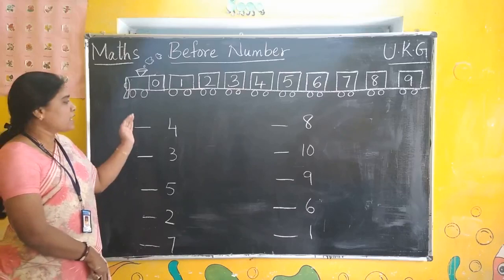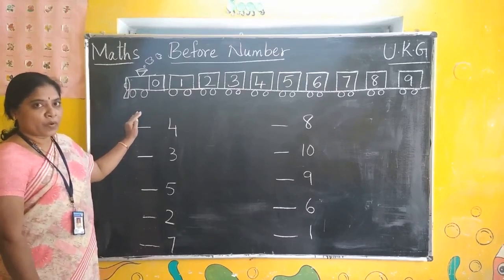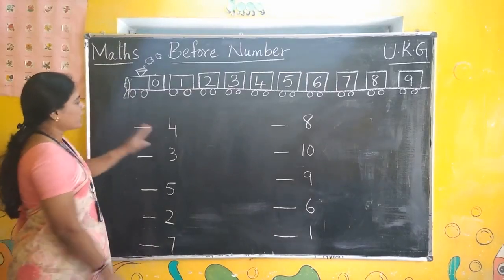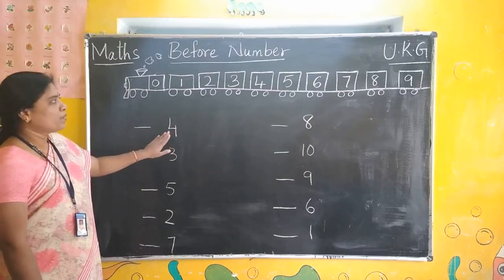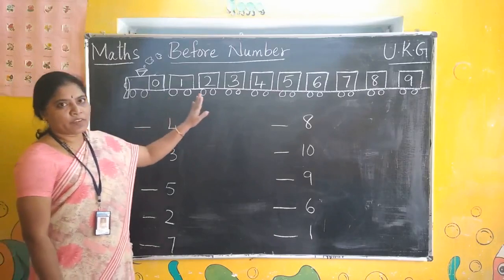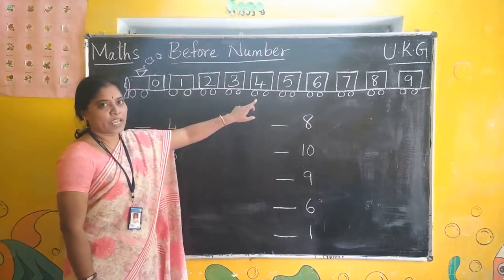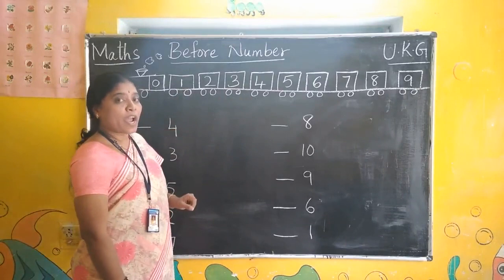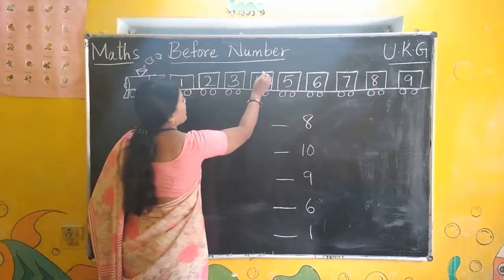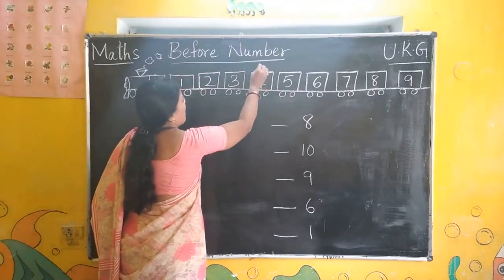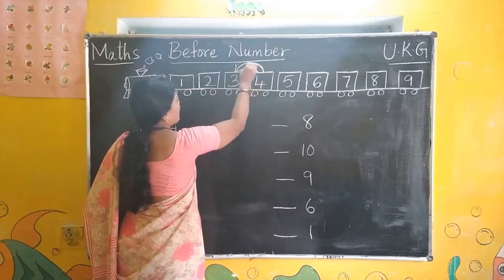Before number means the number that comes first. Now, look at this number. What is this number? 4. Now, look at this train. Where is 4? Here. How to identify before number? We have to draw one arrow mark like this, to the earlier number.